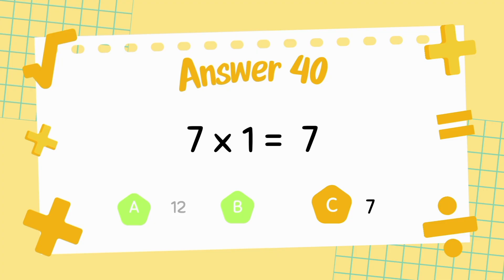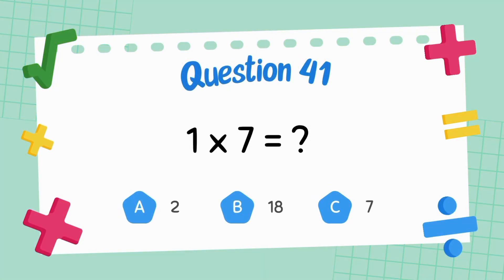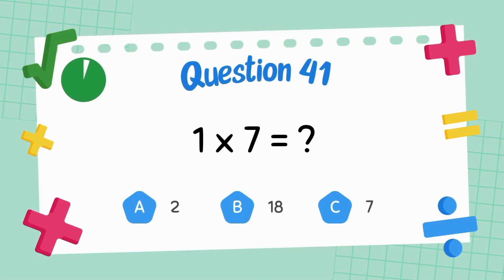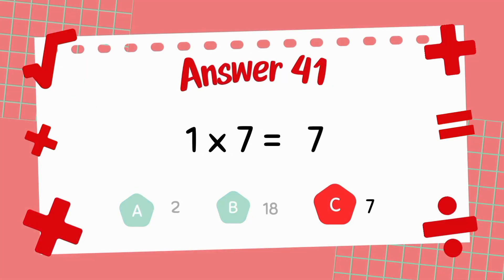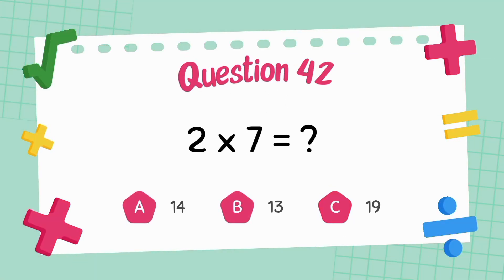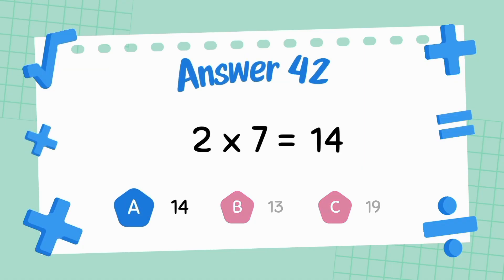What is six multiply seven? What is two multiply seven? What is seven multiply seven? The answer is fourteen.